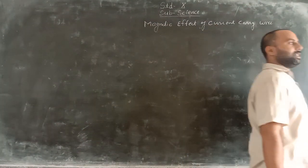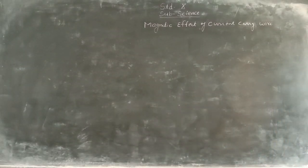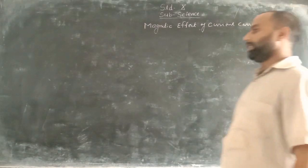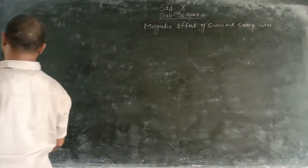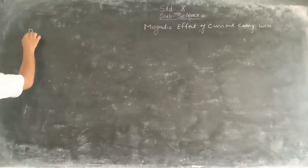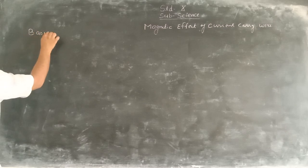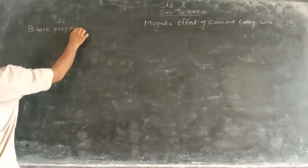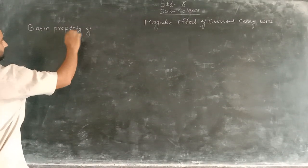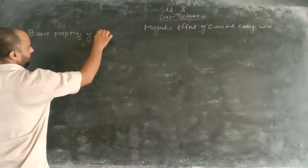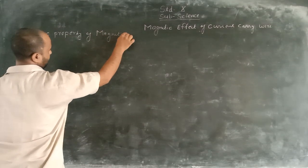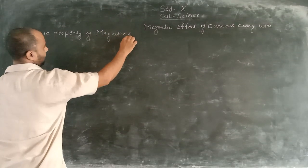We have discussed only three basic properties in the previous session. So now we will discuss the next basic properties of magnetic field lines that are to be analyzed here.